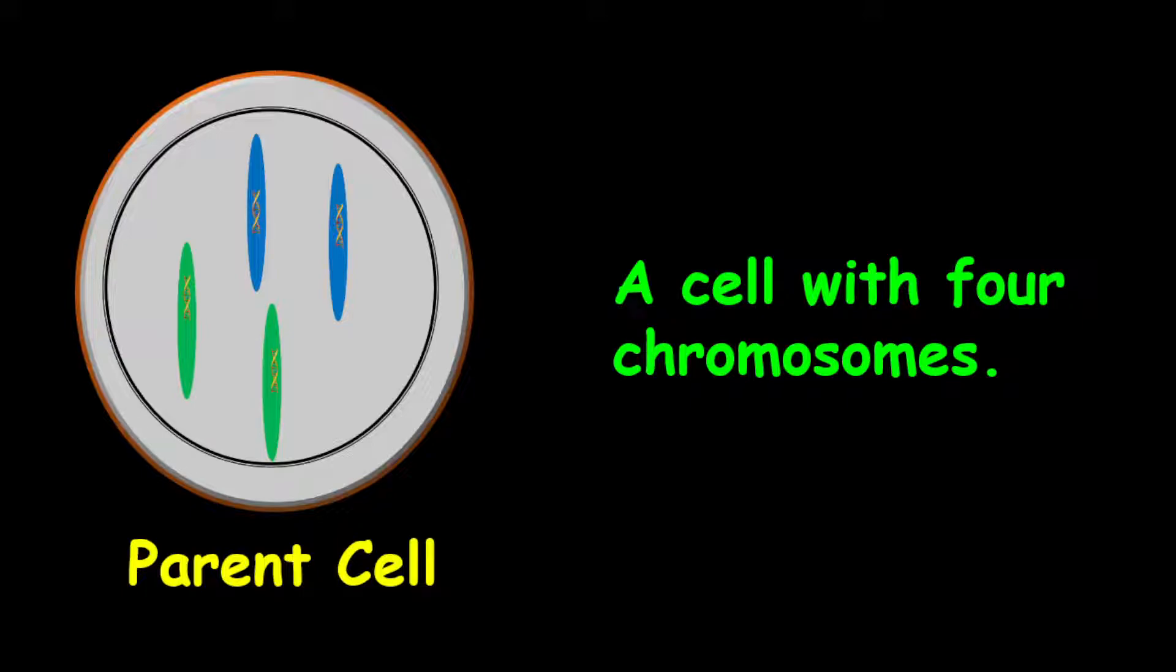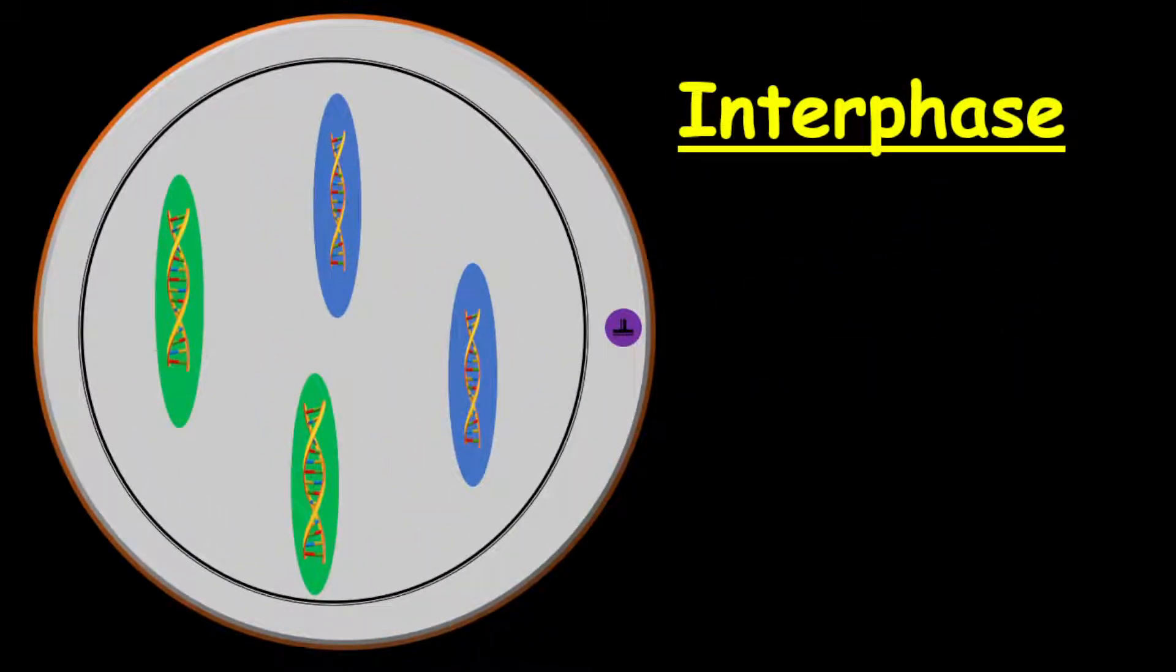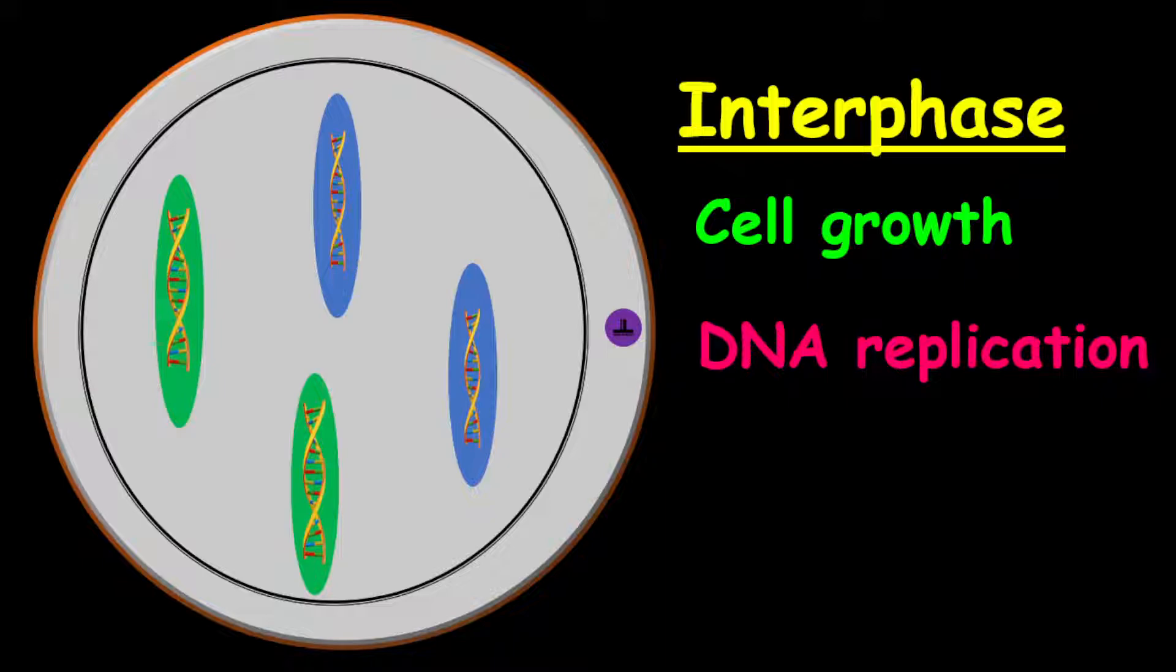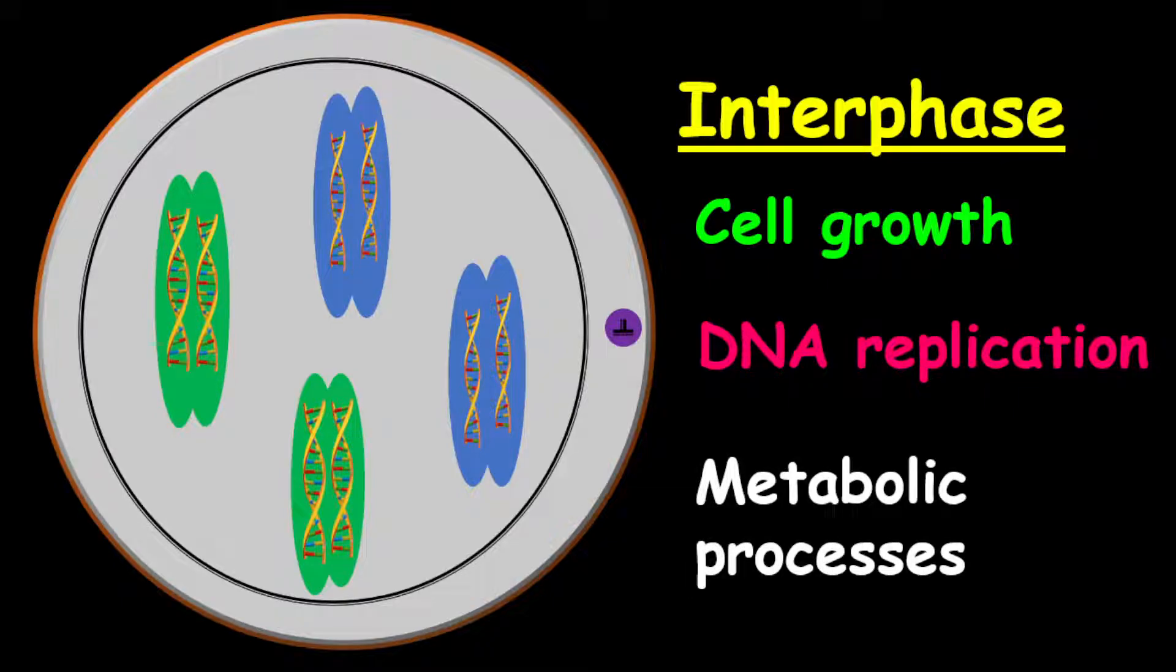Before a cell can divide, it will undergo a preparation phase, which is called the interphase. During the interphase, the cell will grow and also the DNA will replicate. What DNA replication means is that the number of DNA will be doubled. This will result in twice the number of chromatins because the number of DNA accounts for the number of chromatins. Also, in the interphase, you'll have regular metabolic processes taking place.